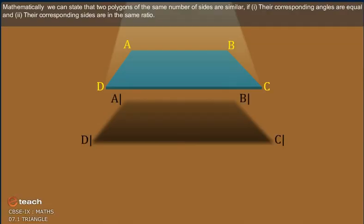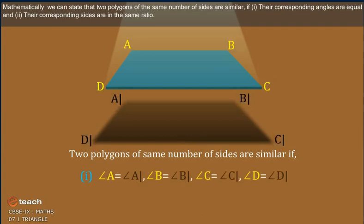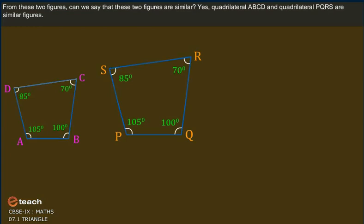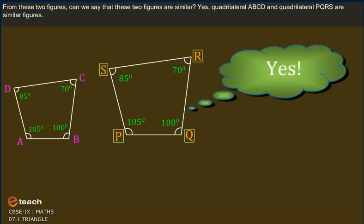Mathematically, we can state that two polygons of the same number of sides are similar if: first, their corresponding angles are equal, and second, their corresponding sides are in the same ratio. From these two figures, we can say that quadrilateral ABCD and quadrilateral PQRS are similar figures.